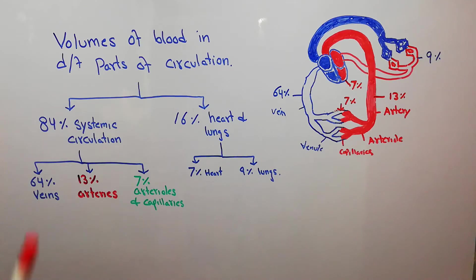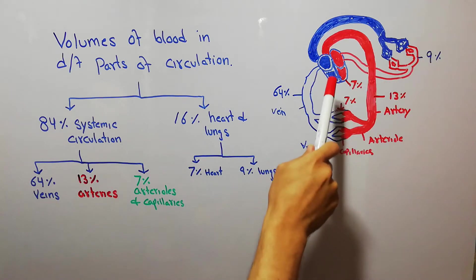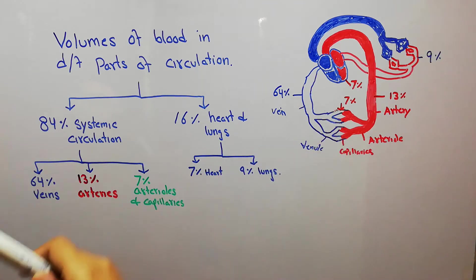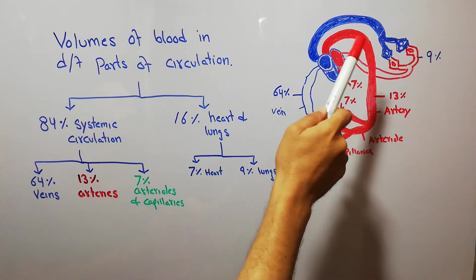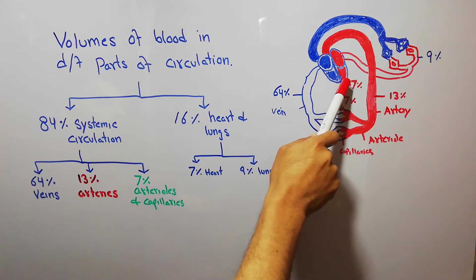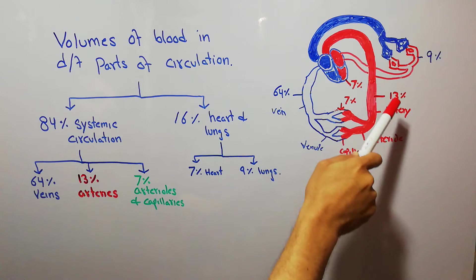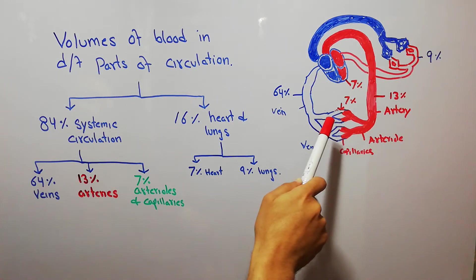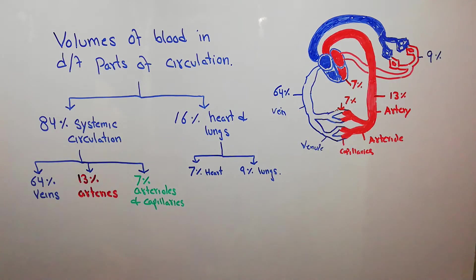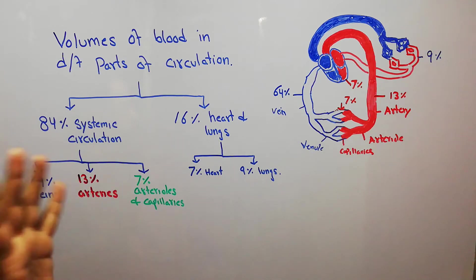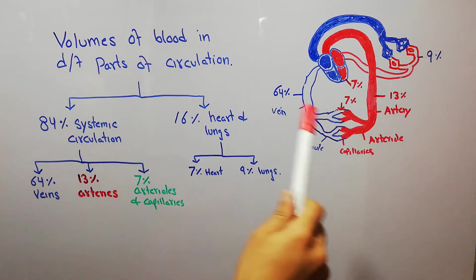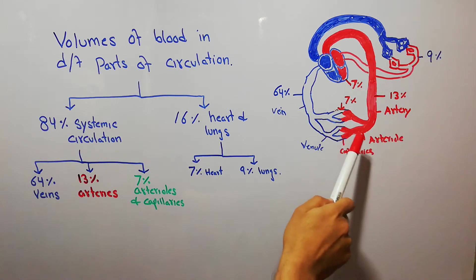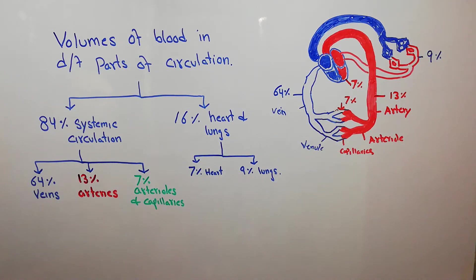Today we are going to discuss the volumes of blood in different parts of circulation. We previously discussed that the circulatory system basically consists of two circuits: the pulmonary circuit and the systemic circuit. The pulmonary circuit takes the blood to the lungs where it gets oxygenated and brings it back to the left side of the heart. We also discussed the different characteristics of the arteries, arterioles, capillaries, venules, and veins.